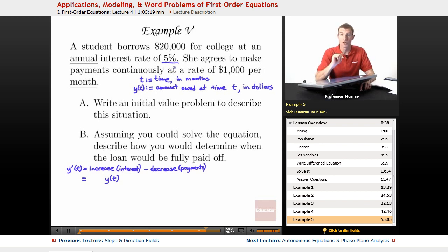But that's an annual interest rate. So what that means is that every year she would have to pay back an extra 5% of what she owes. So 5% is 0.05, but we're measuring things in terms of months. So every month her interest rate would be 1/12th of that.